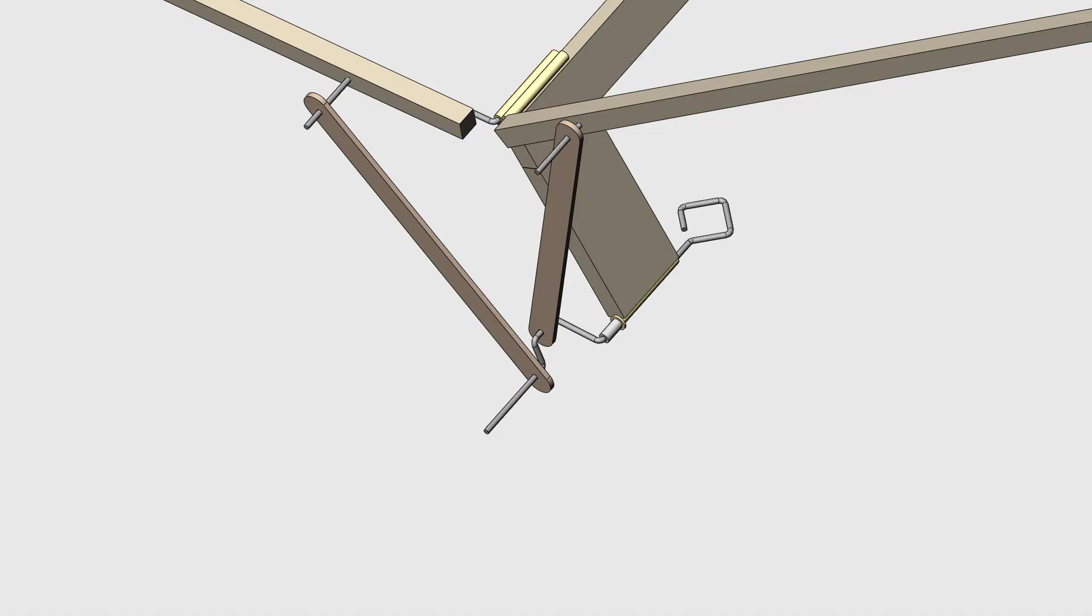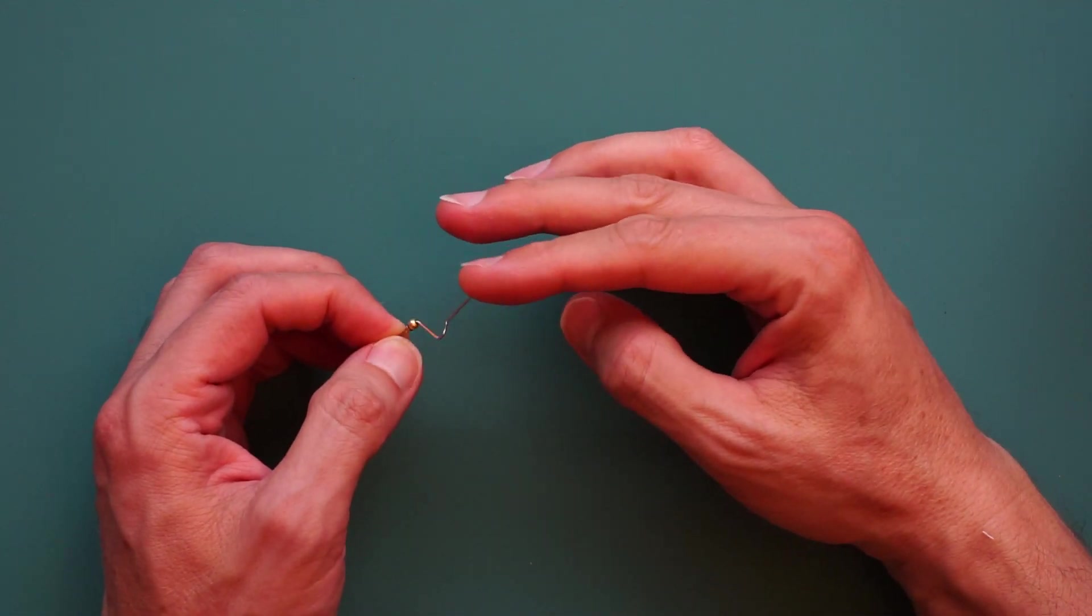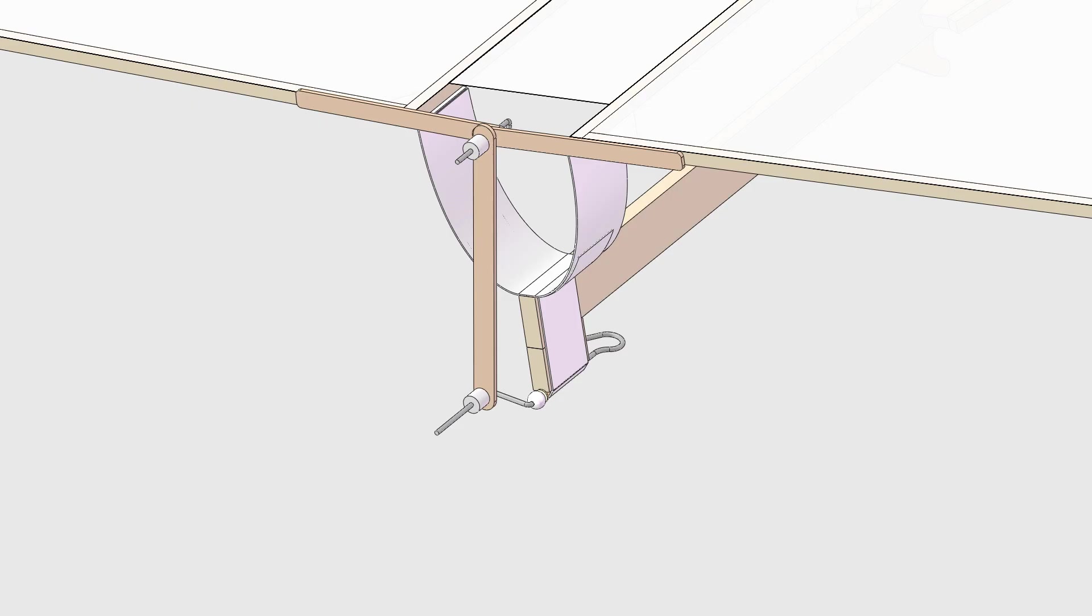Typical ornithopters use a complicated crank design to synchronize the left and right wings. The part typically made of bent wire can be tricky to build, especially when you're first starting out. The flexible supports allow a simpler crank and that makes it easier to build.